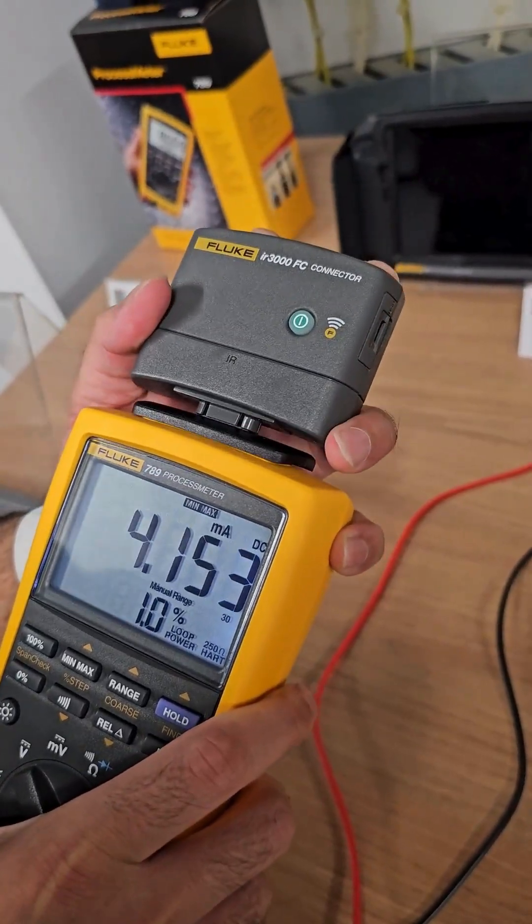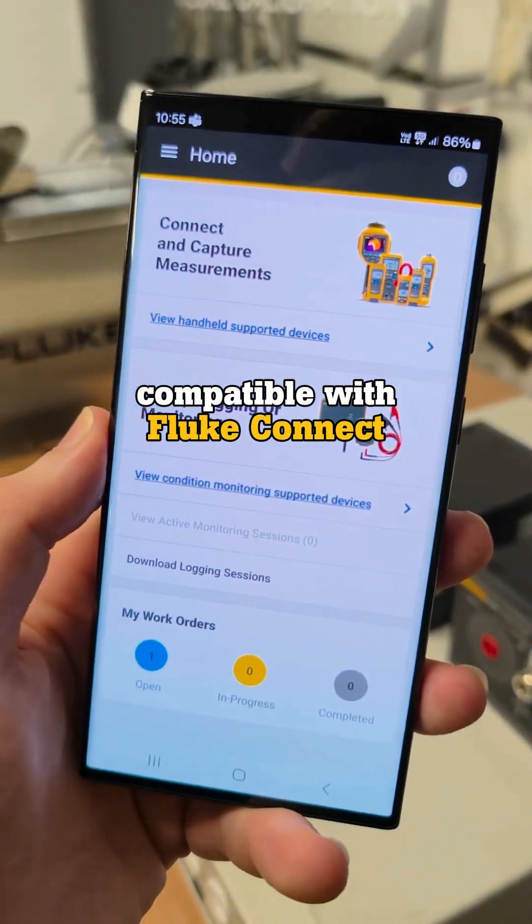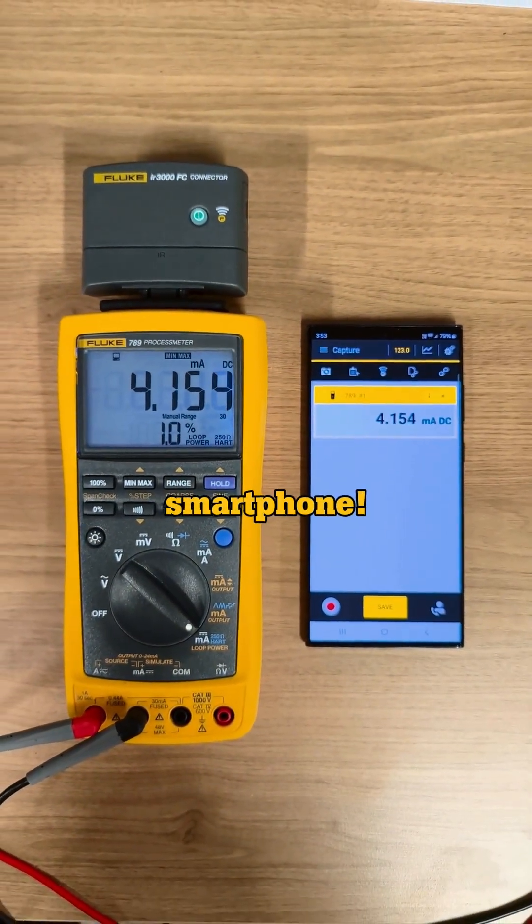You can even use the optional Fluke IR3000 FC connector to make the Fluke 789 compatible with Fluke Connect, meaning you can wirelessly transfer test data directly to your smartphone.